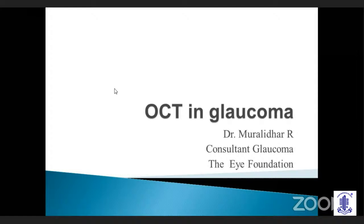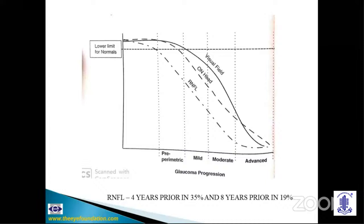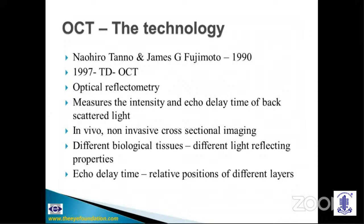I'll be talking on OCT in glaucoma. The need for OCT stems from the need for a pre-perimetric diagnosis. It is well known that there should be at least a 20% diffuse ganglion cell loss or 40% focal ganglion cell loss for a field effect to develop. RNFL thinning precedes the development of field loss by up to four years in 35% of individuals and by eight years in up to 19%. Please remember that the echo delay time is of the order of 5 femtoseconds and is not directly measured — it is measured by Fourier transformation and optical interferometry.